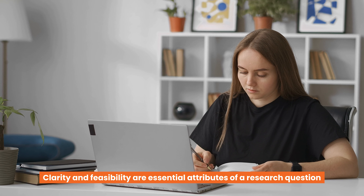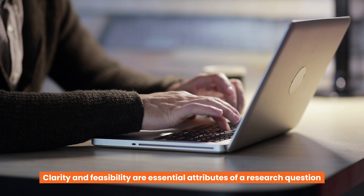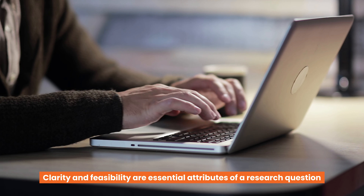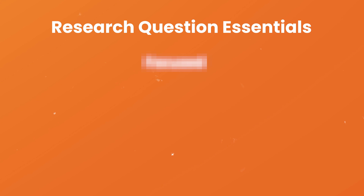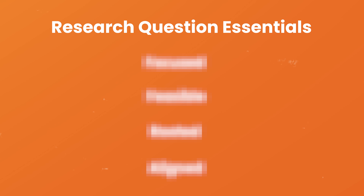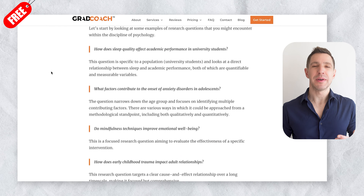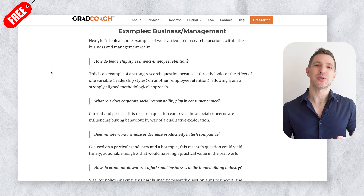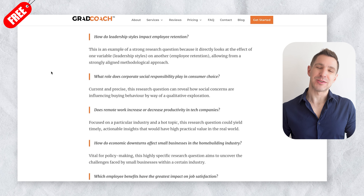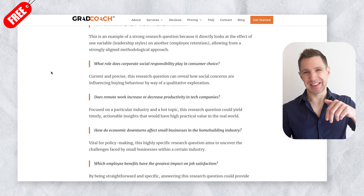As you can see in these examples, research questions are clear, specific questions that can realistically be answered within a study. These attributes of clarity and feasibility are really important, but they're just part of the picture. Later in this video we'll unpack four really important factors that you need to consider when crafting your research questions, so be sure to stick around for that. You can also find loads more sample research questions over on the Grad Coach blog — link in the description.